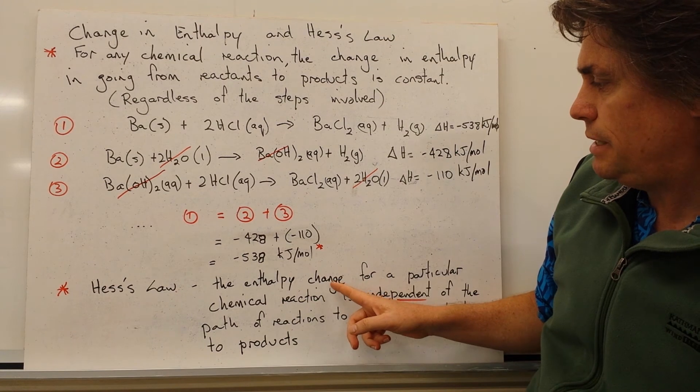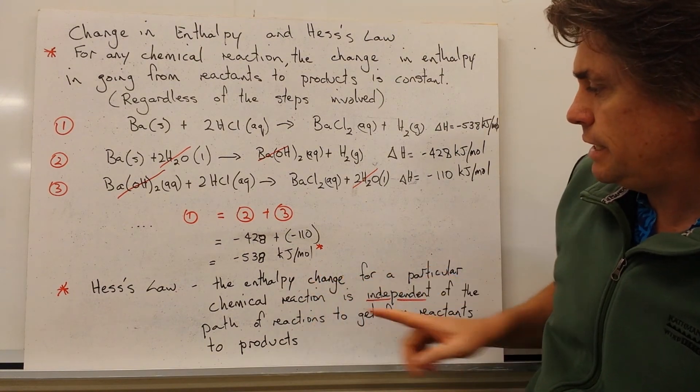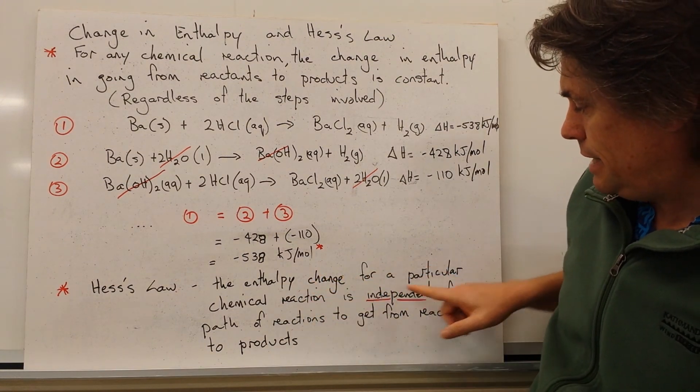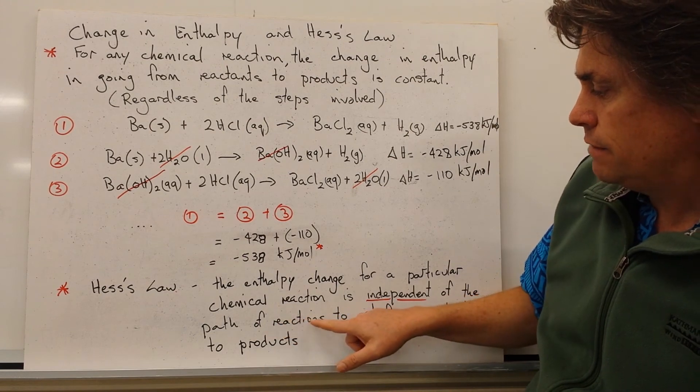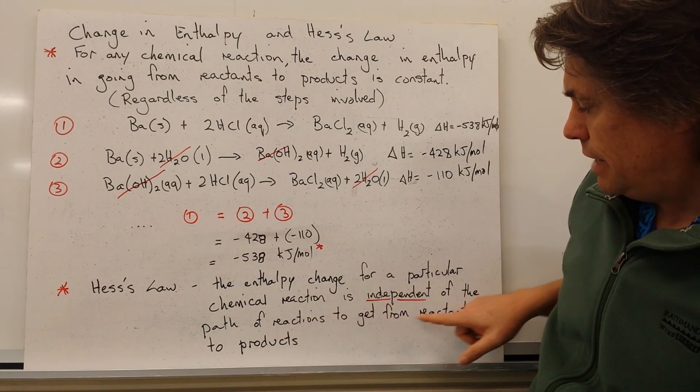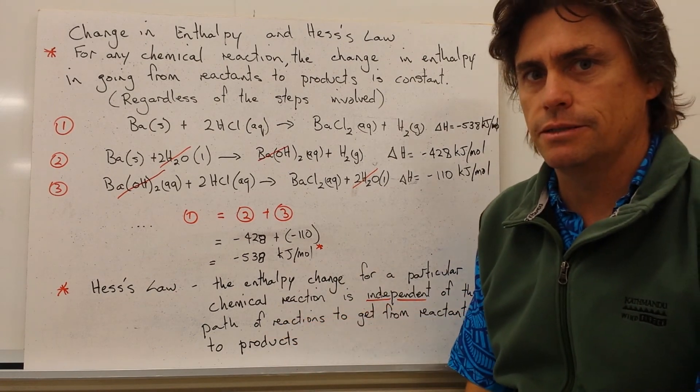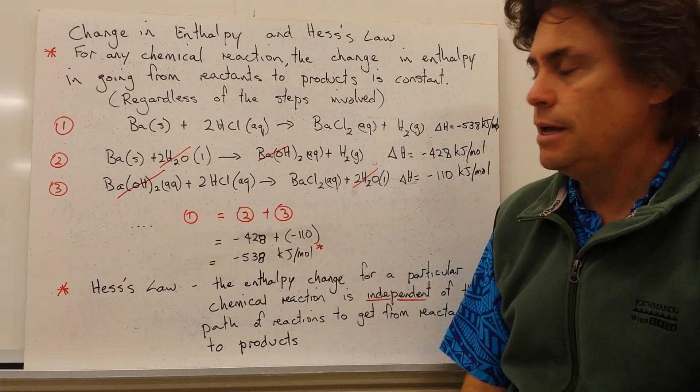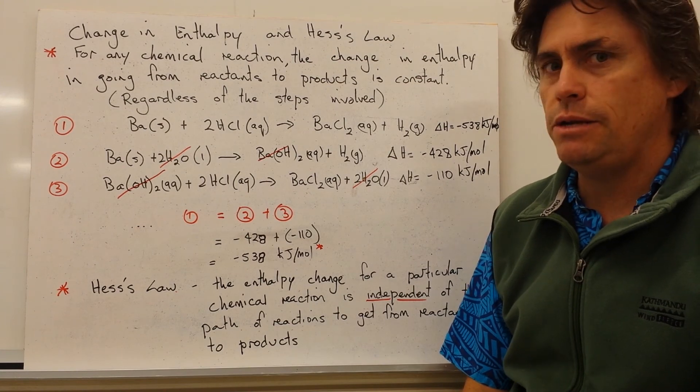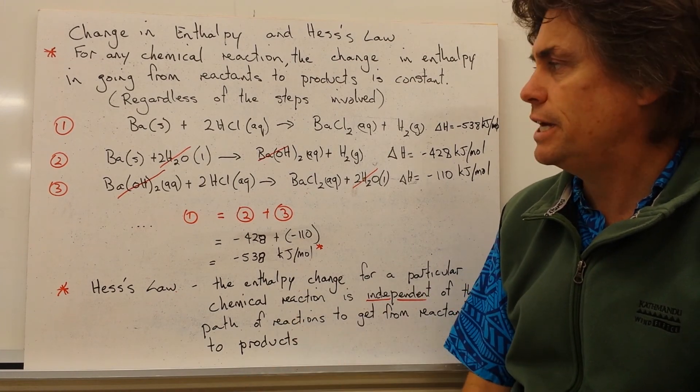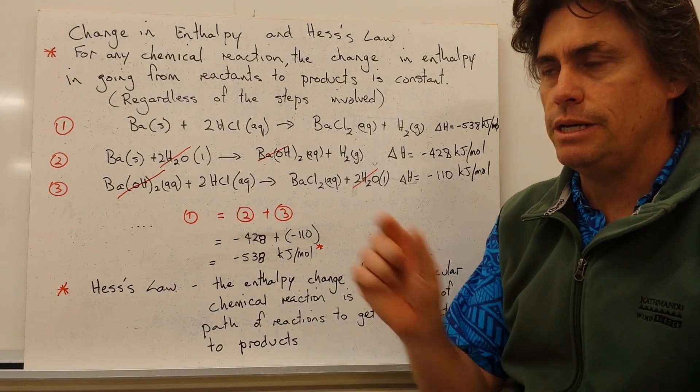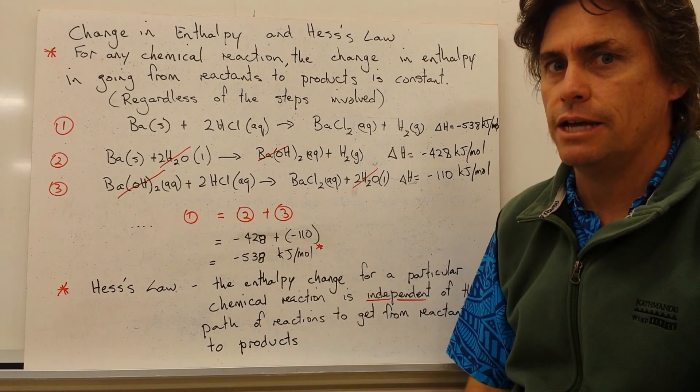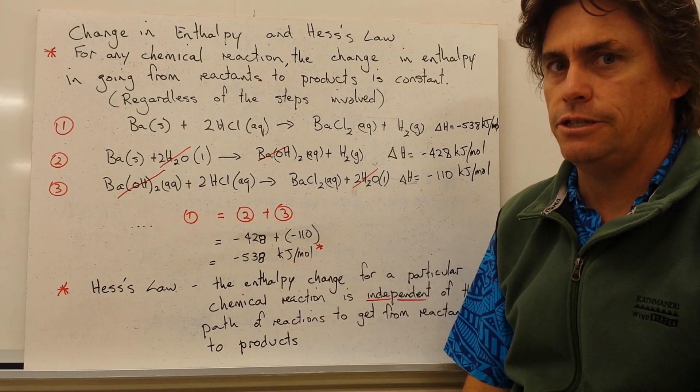So if we define Hess's law, we say the change in enthalpy, or the enthalpy change for a particular chemical reaction, is independent of the path of those reactions to get from reactants to products. So we can either do it in the one step form, or we can do it in multiple steps. And this becomes important because there are many reactions we can't measure the change in enthalpy for. And we need to go through a series of reactions to calculate that change in enthalpy.